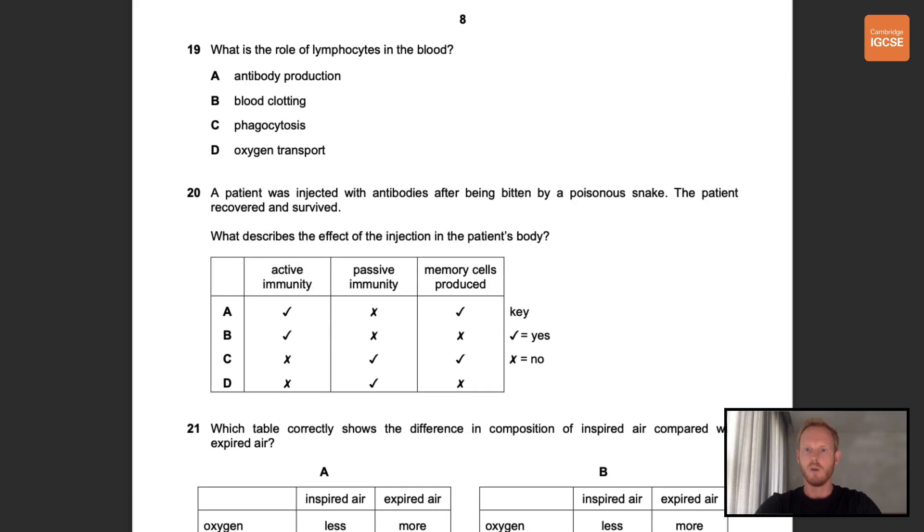Number 19. What is the role of lymphocytes in the blood? So lymphocytes are one of the two types of white blood cells that you need to know about, the other being phagocytes. Phagocytes engulf pathogens by phagocytosis, whereas lymphocytes produce antibodies. So the correct answer is A.